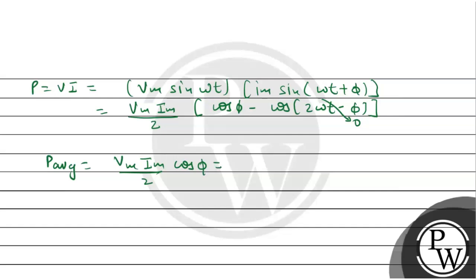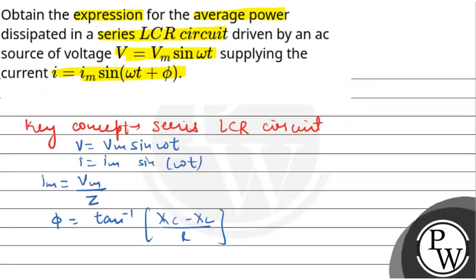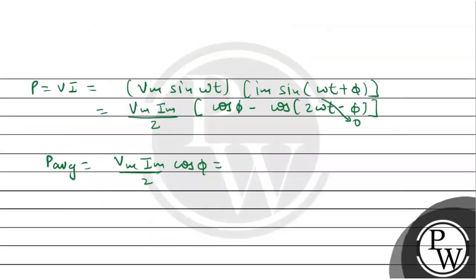So the average power is coming out to be Vm Im upon 2 times cos φ. The average power is Vm Im upon 2 cos φ.